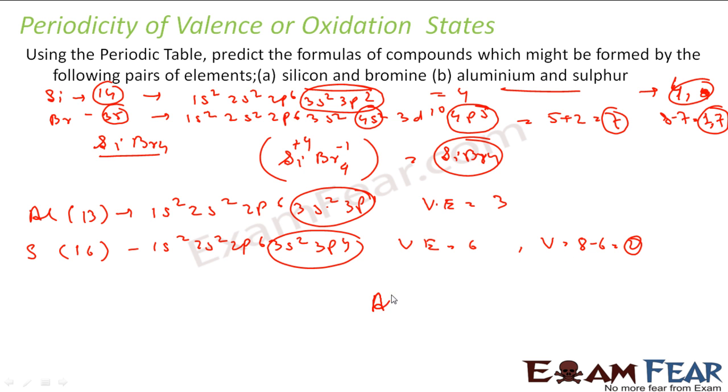So we will have something like Al2S3. Why? Because aluminum has plus 3 and sulfur has minus 2. So plus 3 and minus 2, the LCM will be 6. 6 by 3 is 2, so I will make 2 aluminum. And 6 by 2 is 3, so I will make 3 sulfur. So I will get Al2S3. Find the LCM of 3 and 2 and make sure you make a neutral molecule.